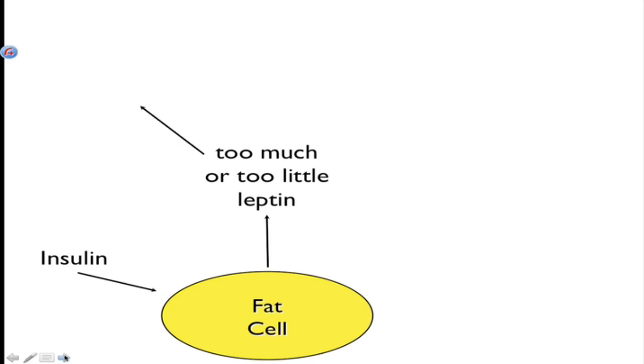What do they result in? Well, if the brain is not getting the signal that leptin is there, either because leptin is way too low or leptin is way too high, what are you going to do? Your body is going to say, hey, looks like we don't have any fat on our body. We better eat more.